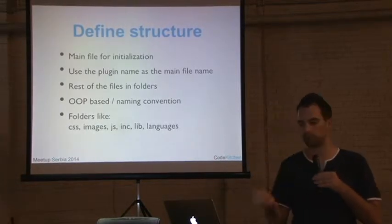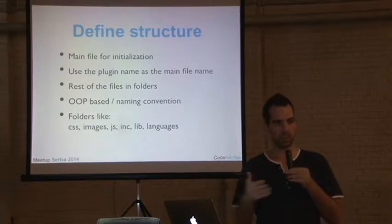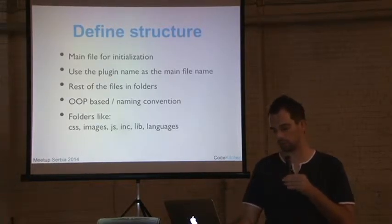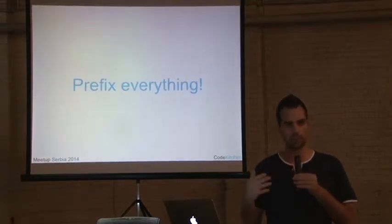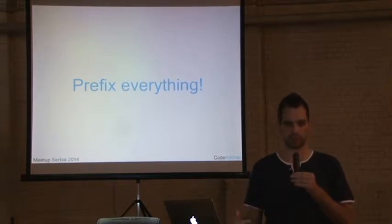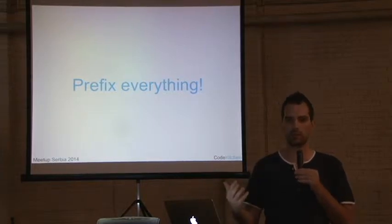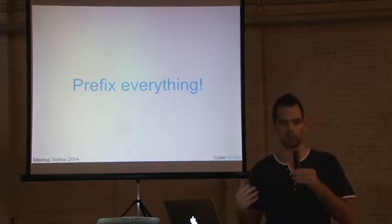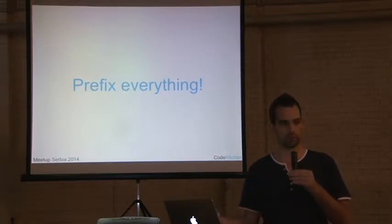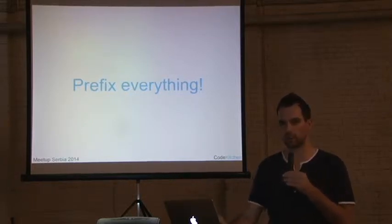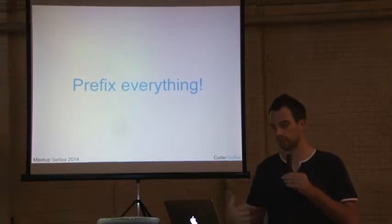I have folders like CSS, images, JavaScript, includes, and lib. Includes is for my own code; lib is for third-party code. And prefix everything — even if you use someone else's library, try to prefix it. Many plugins include OAuth, for example. If two plugins include it without prefixing or checking if the class already exists before loading it, activating both plugins will completely break the website. These kinds of conflicts happen every year.